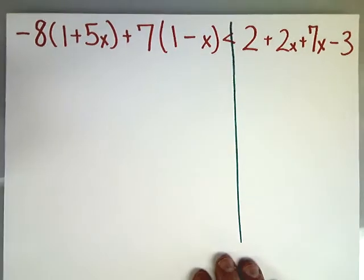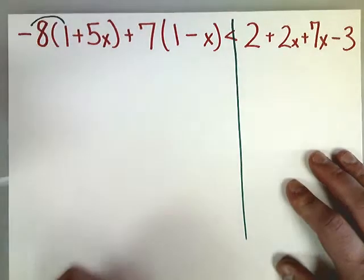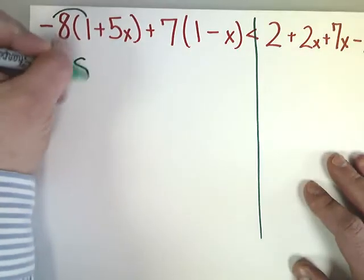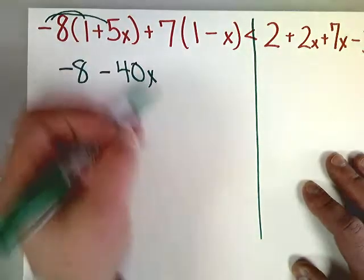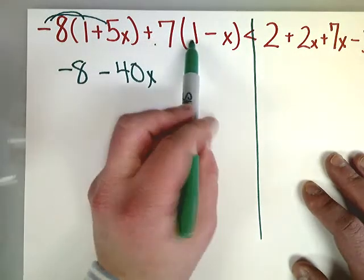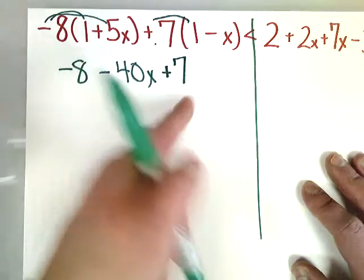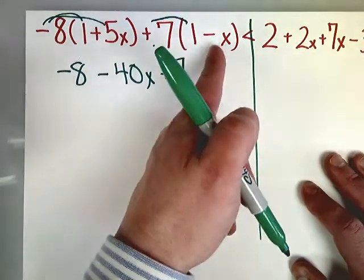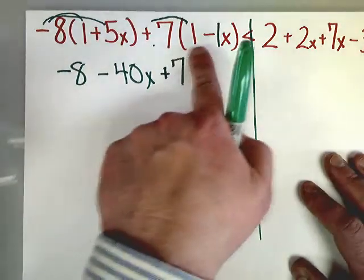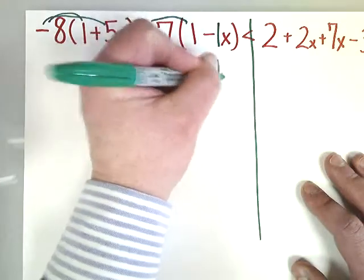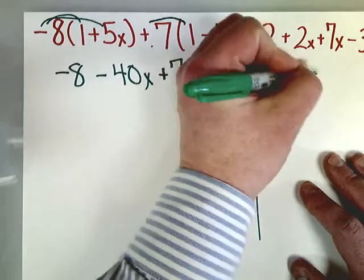Now, the next step would be Baby Goes Bathroom or the distributive property. Negative 8 times 1 gives you negative 8. Negative 8 times 5x gives you negative 40x. Then I'm going to do 7 times 1, which is plus 7. 7 times negative 1x is negative 7x. Bring down all your junk from the other side because there's no distributive property.